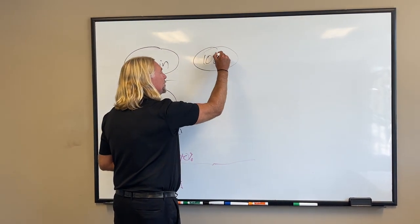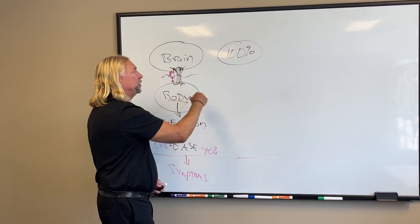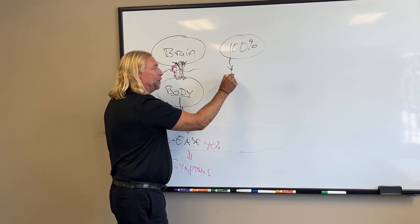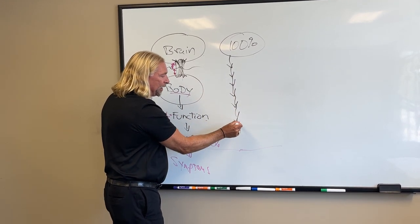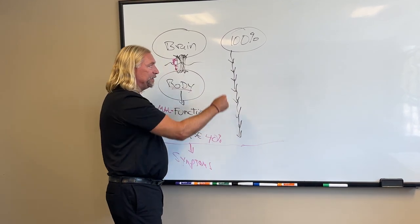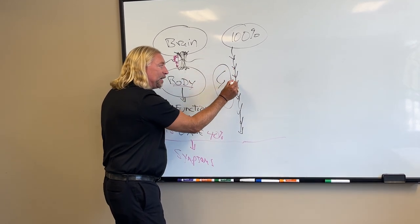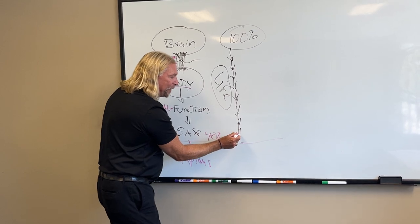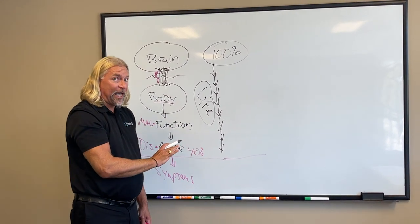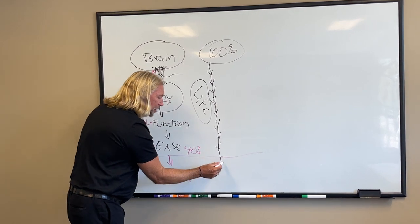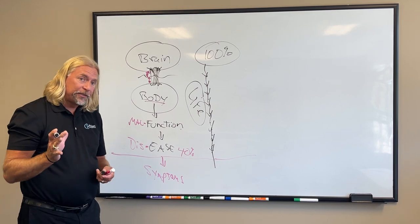Now how do you end up there? You start out hopefully when you're little at 100%, everything's working great with all this communication. But then you slip, you fall, you shovel, you sleep wrong, crash on your bike, car wreck, play football. You do all these things in life that stack up like straws on a camel's back. None of them are even hurting necessarily yet until you drop below this 40% line.